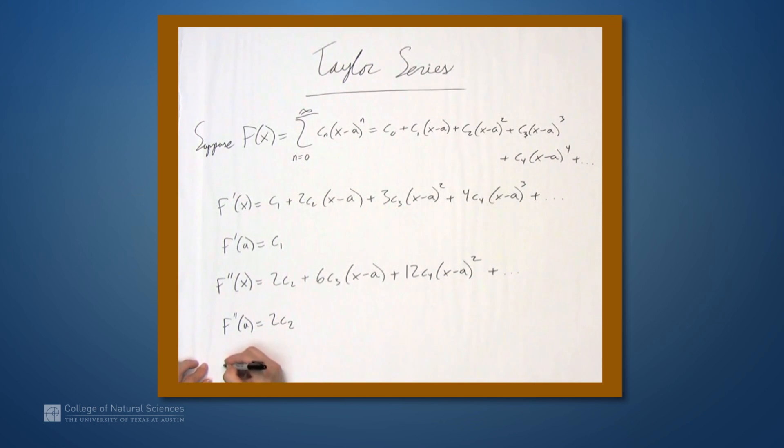What happens when we take the third derivative? So we get f''' of x. This becomes 6c3. The next term becomes 24c4x-a plus a bunch of other things with x-a in them. So f''' of a is 6c3.